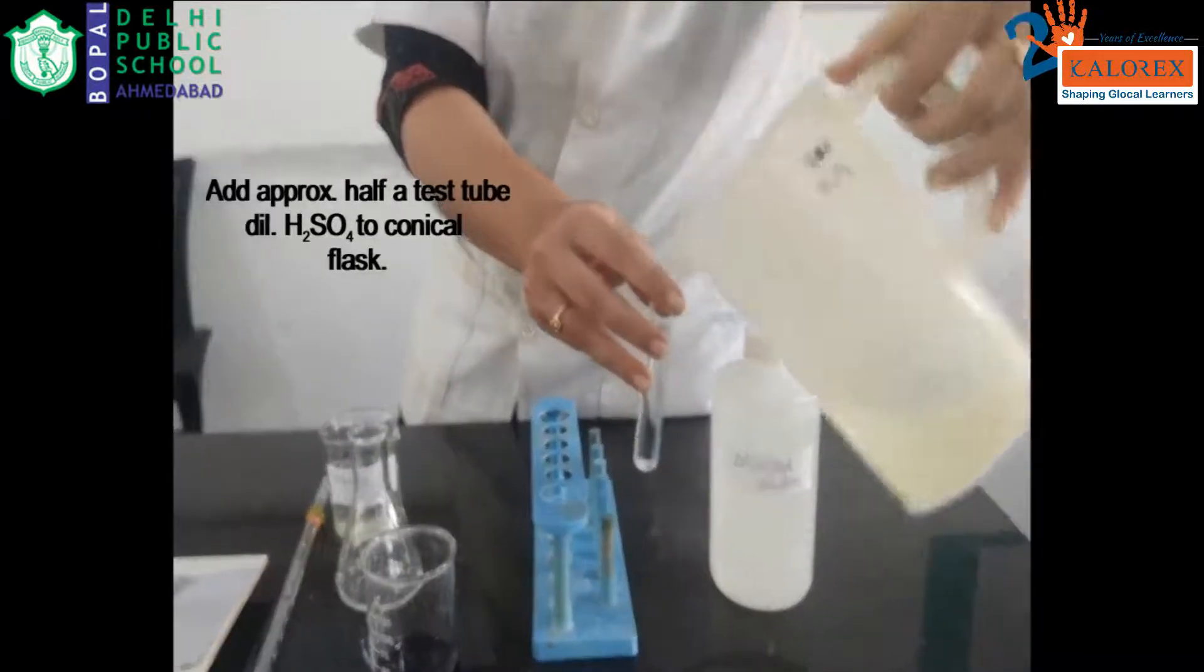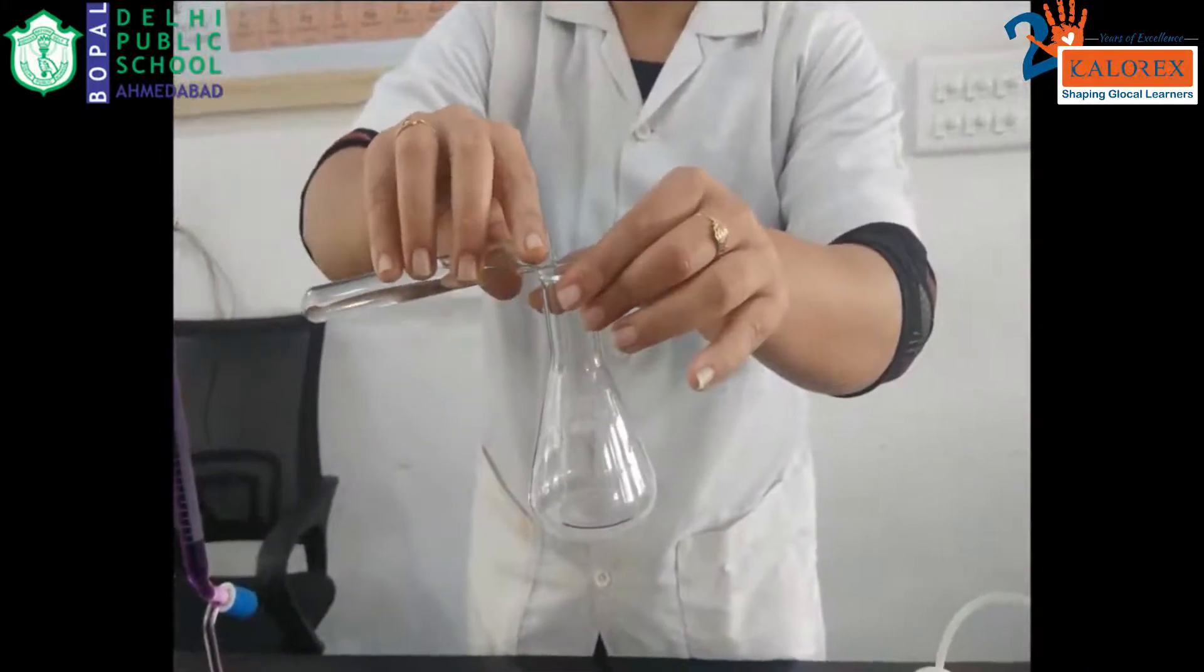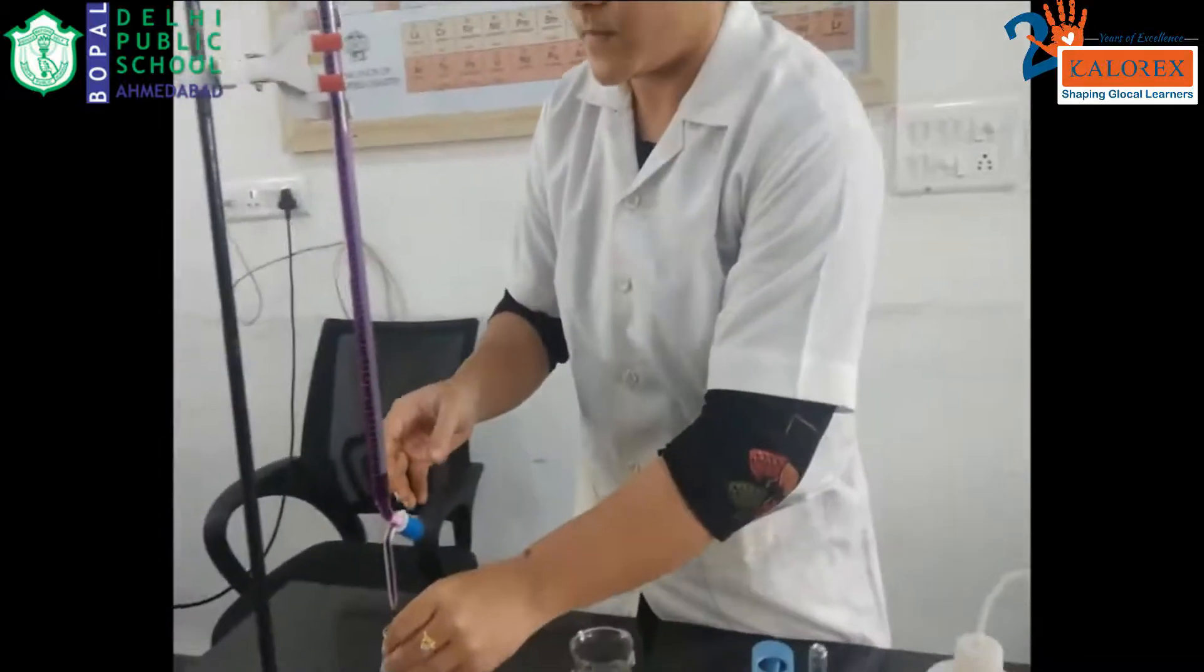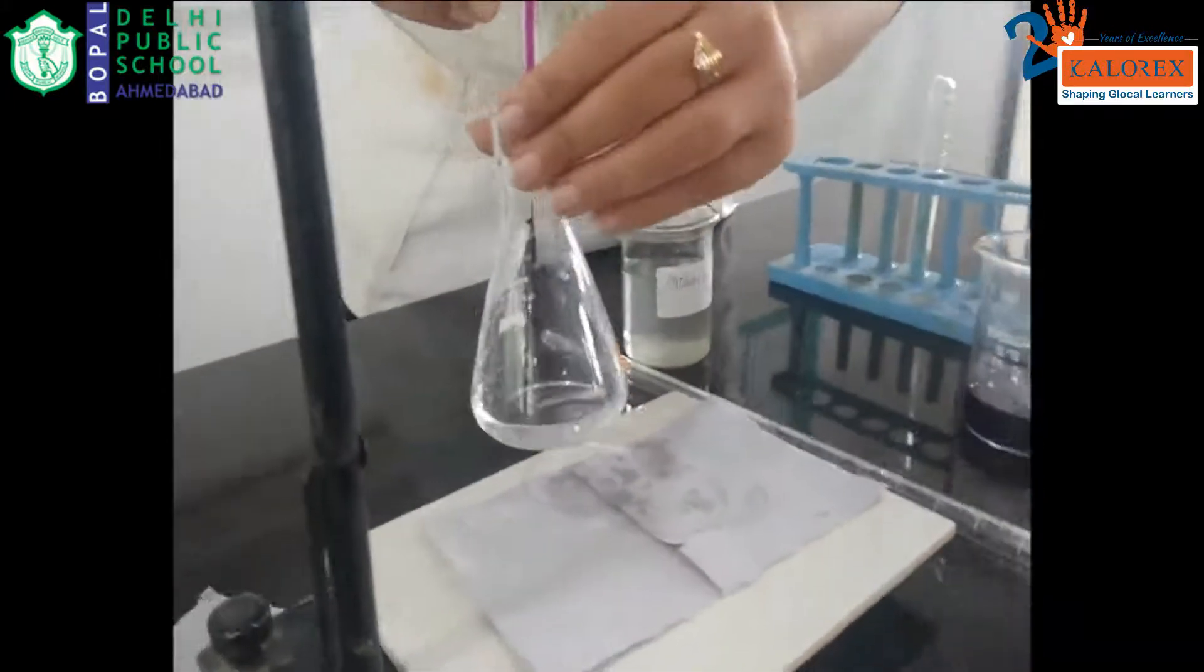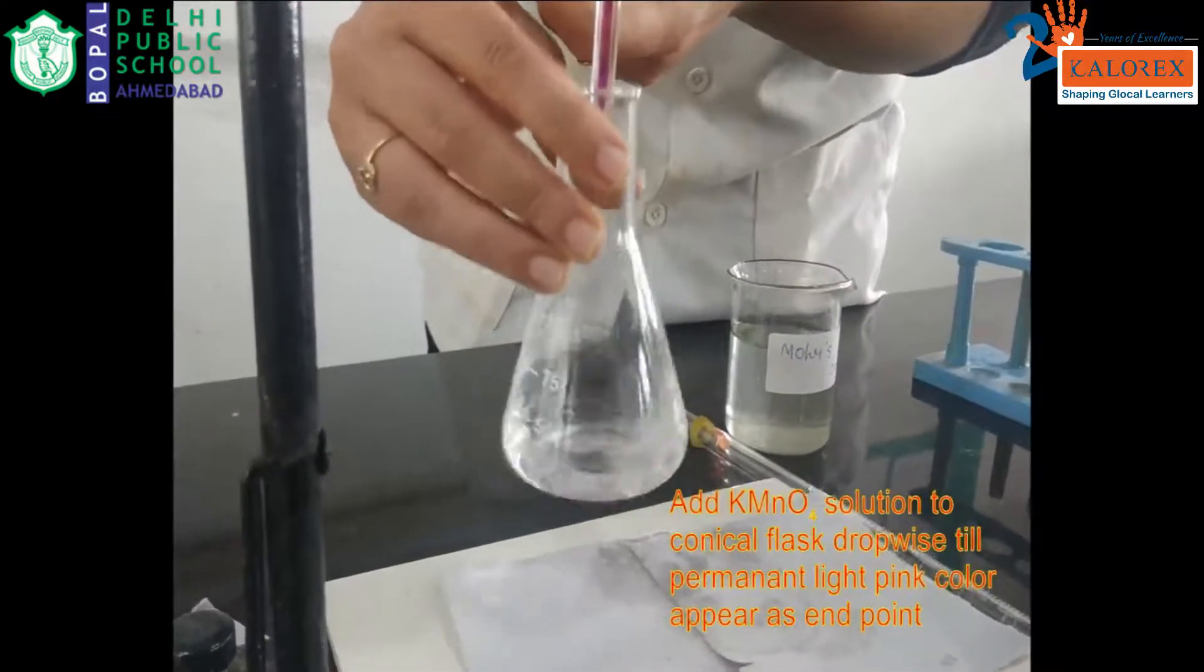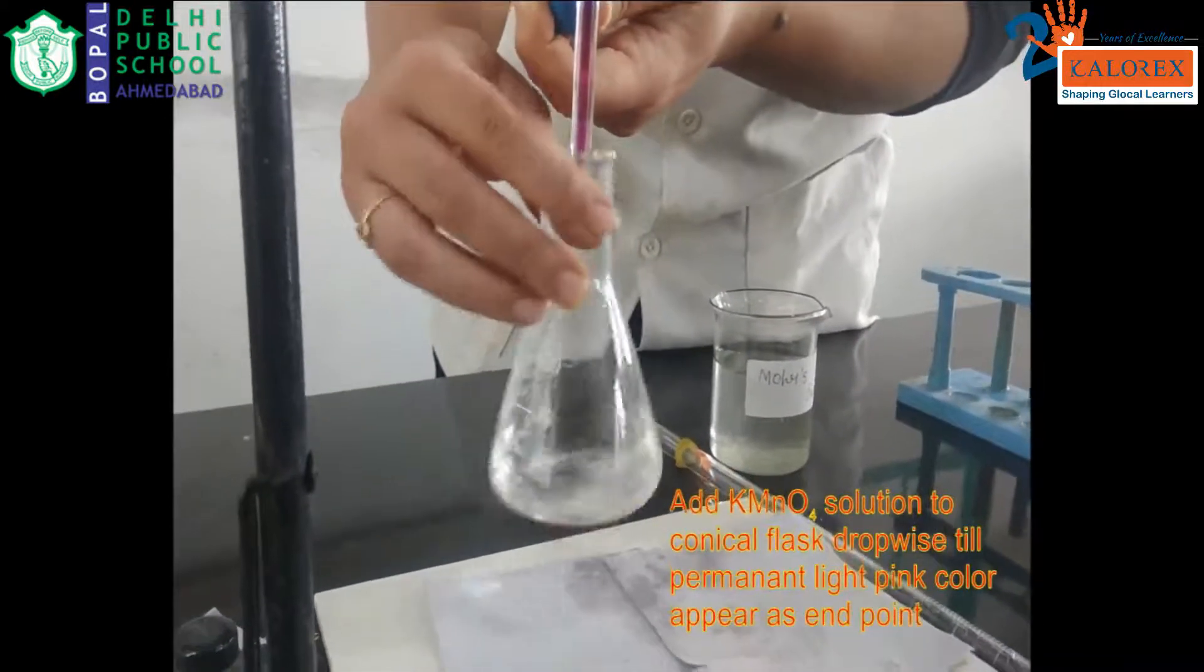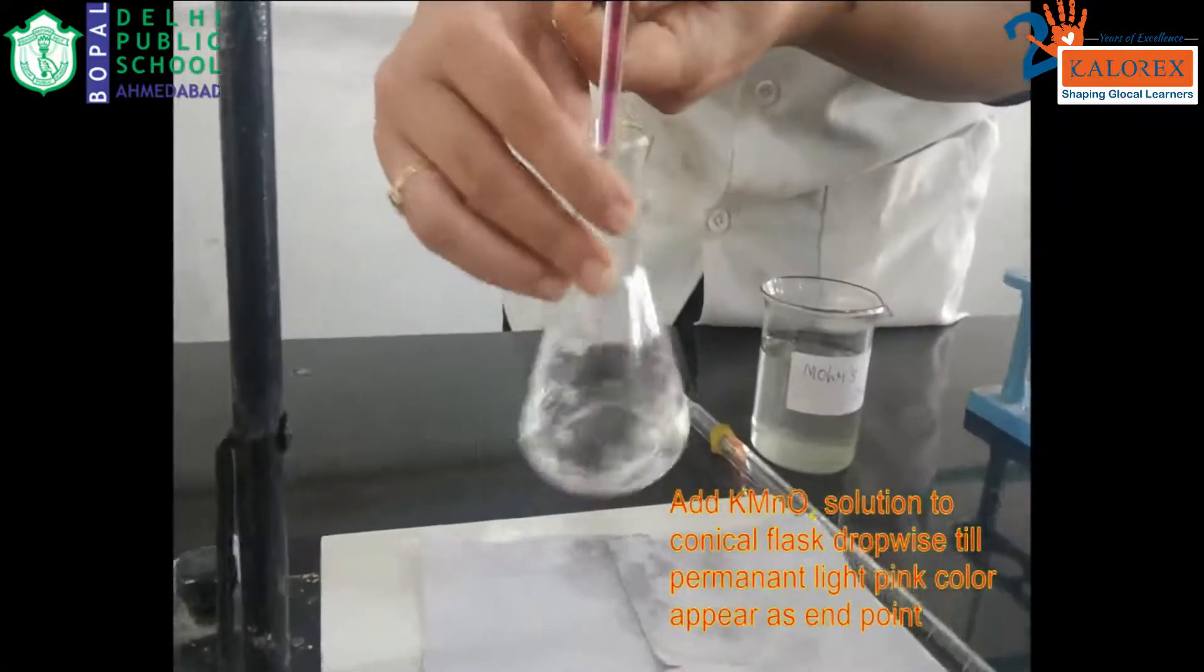As the KMnO4 works as a good oxidizing agent in the acidic medium, here we are using sulfuric acid, dilute sulfuric acid that is approximately little more than half the test tube, and transfer it into the conical flask. Stir the solution well and the solution is ready for the titration. Here the burette is already filled with the KMnO4 at the zero mark. Add KMnO4 drop by drop till we get the permanent pink color as the endpoint for the titration. Ensure constant stirring of the solution.